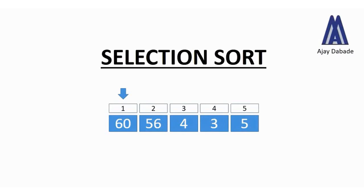Hello everyone and welcome back. This is Ajay and today we are going to learn about selection sort. There are five numbers in front of you: 60, 56, 4, 3, and 5. Above the numbers are their positions from 1 to 5.